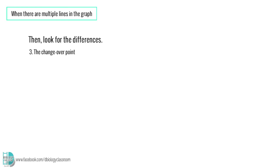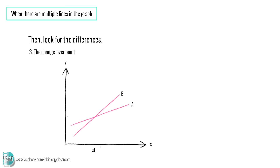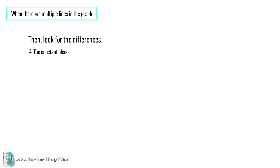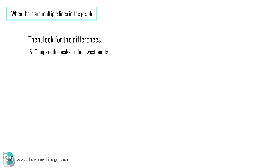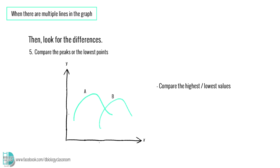Number three, if the two lines intersect at some point, talk about the changeover point. In this example, you can say that a is higher than b in the beginning, but at point x1, b becomes higher than a. Number four, if the graphs become constant, compare which one enters the phase first. In my example, a becomes constant earlier than b by 4 hours. Number five, compare the peaks or the lowest points. You can quote in the value of the peaks, or mention which one reached the peaks first.